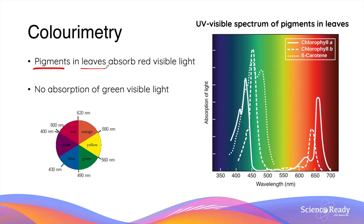This is an example to illustrate how we can use the color wheel to determine the likely absorption of a colored substance. The pigment in leaves, specifically chlorophyll, can absorb red visible light. As we know, leaves are usually green in color, so the pigments themselves will appear to be green. If you take a look at the color wheel, the color opposite green on the wheel is red. This is consistent with the UV visible spectrum of the pigments found in leaves, which shows dominant absorption in the red range of the visible light spectrum. We can also see that there is no absorption of green visible light.